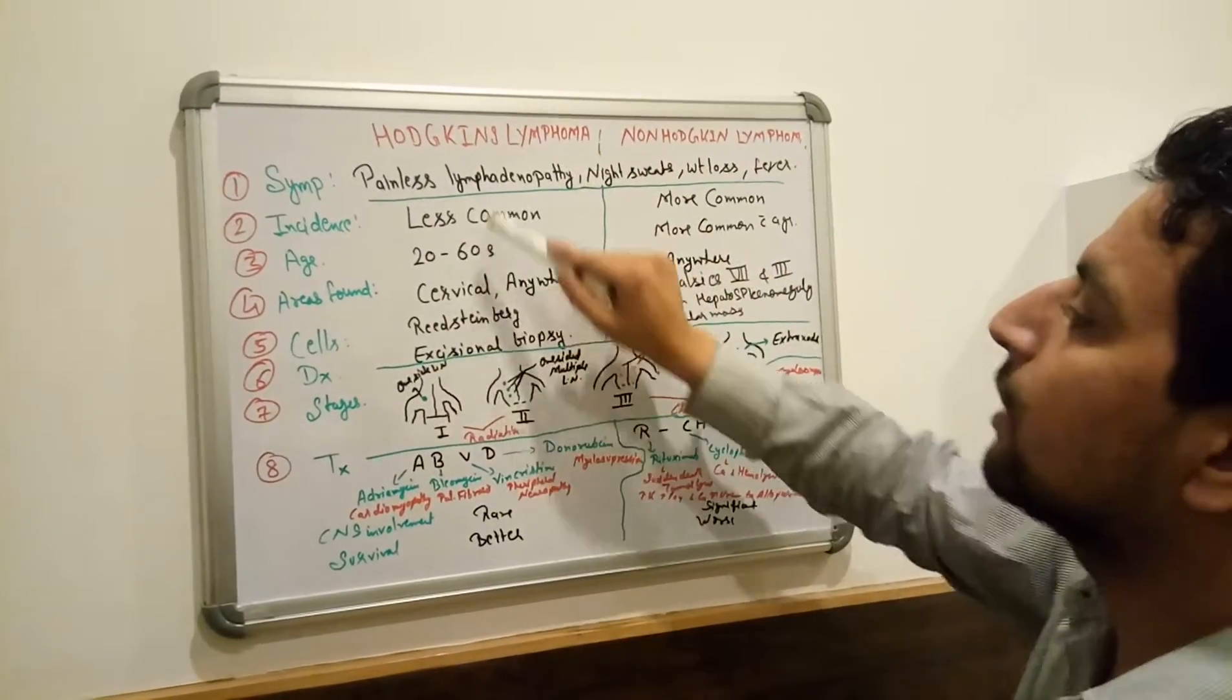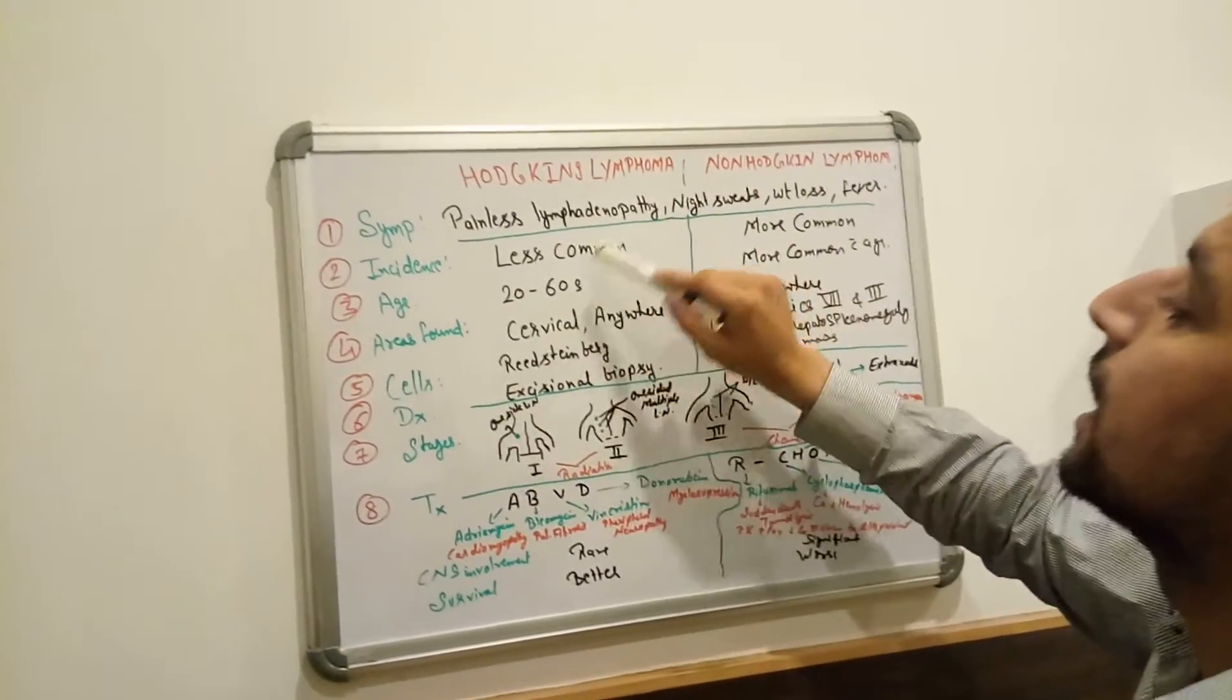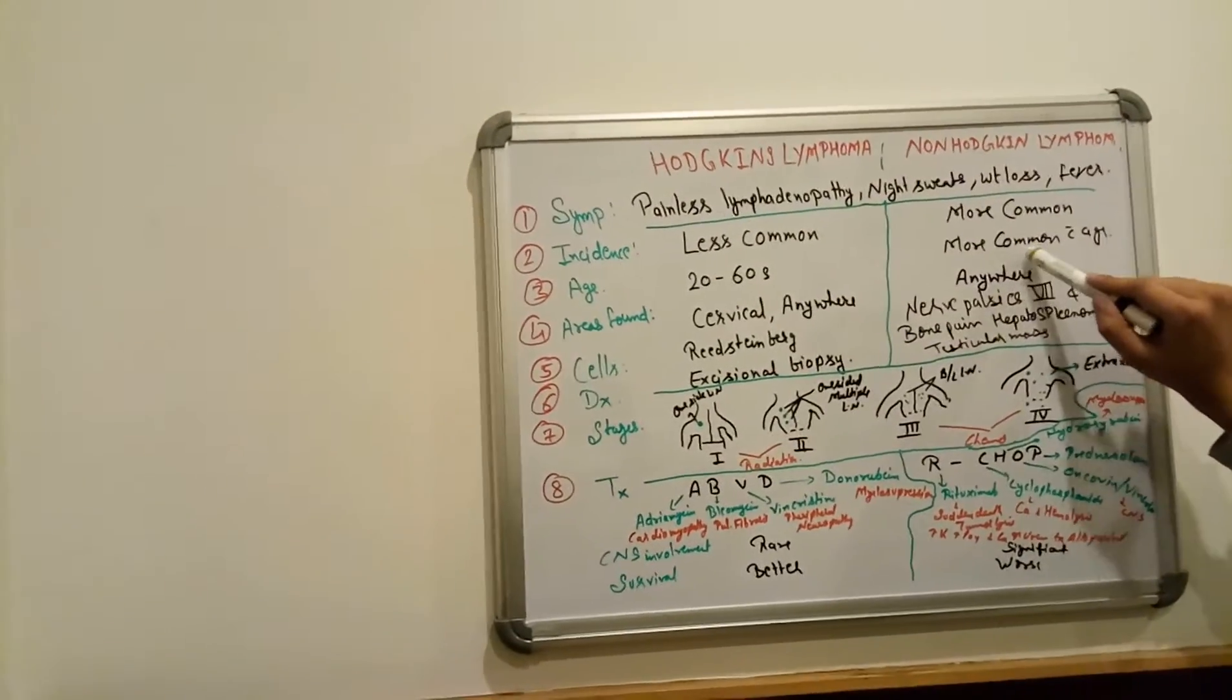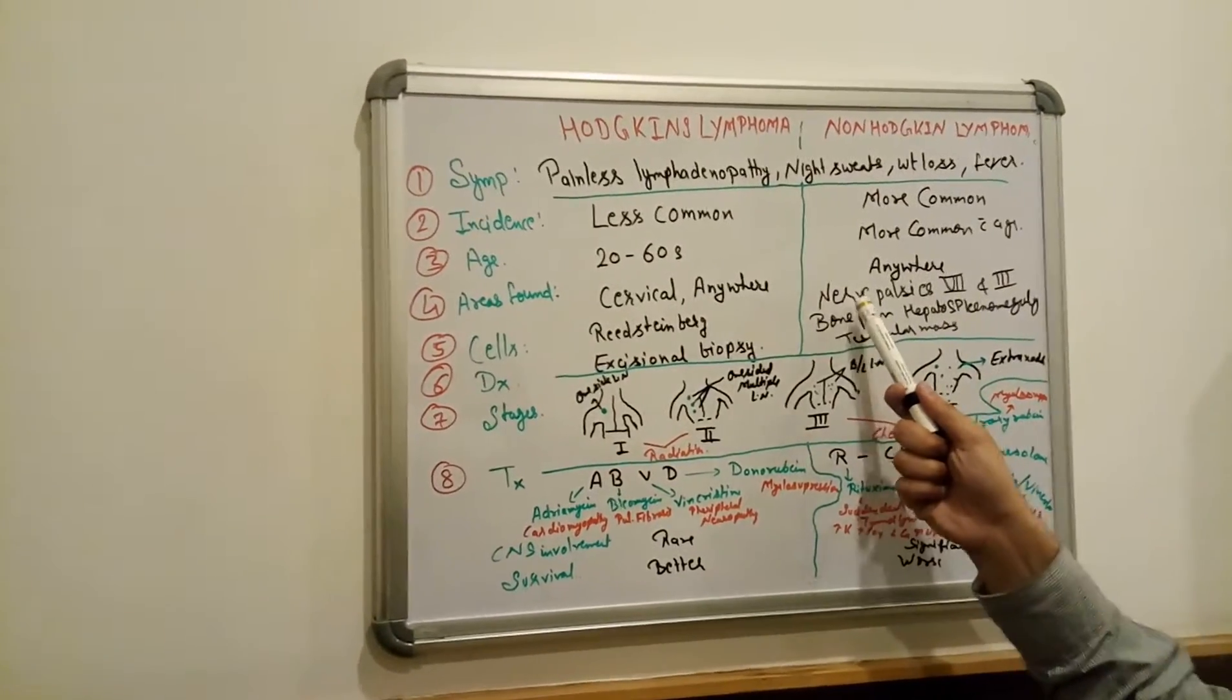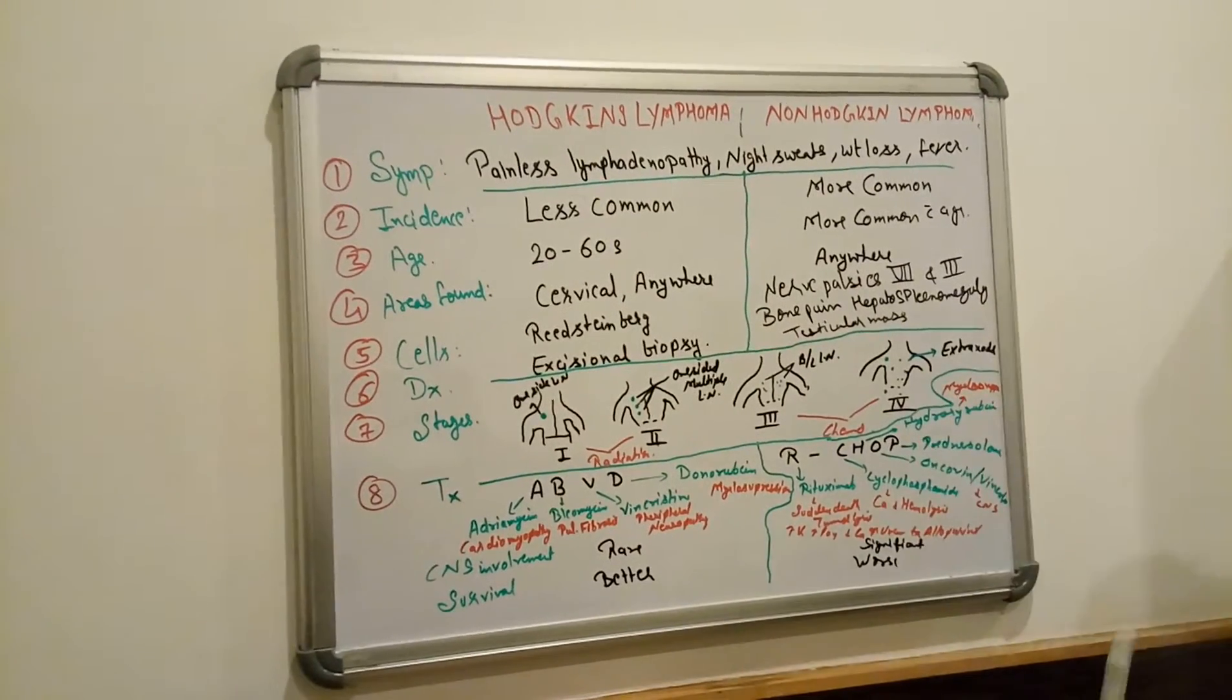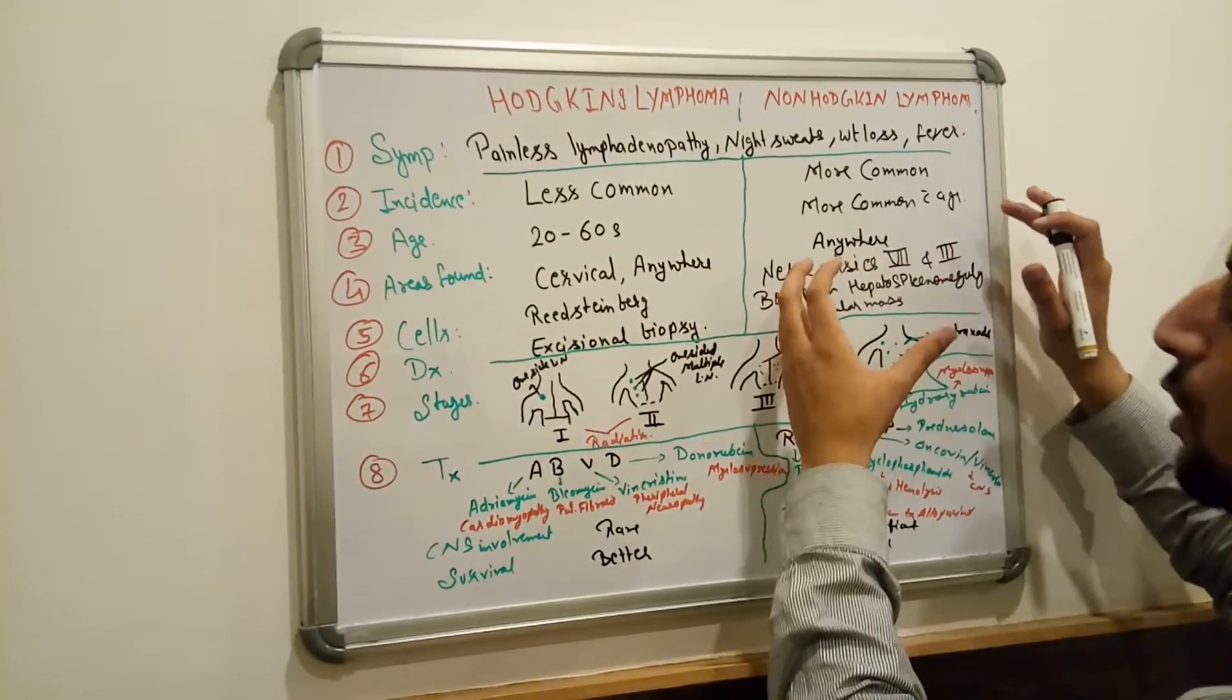Areas found - Hodgkin lymphoma always, always mostly associated with the cervical lymph nodes and anywhere of the body. But whereas in non-Hodgkin lymphoma, it must be found anywhere, anywhere. Here we see nerve palsies, seventh and third nerve, more pain, hepatosplenomegaly and testicular masses. More symptoms in non-Hodgkin lymphoma.